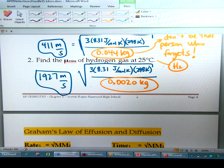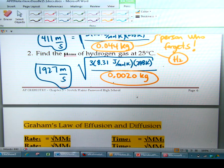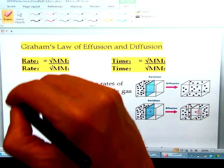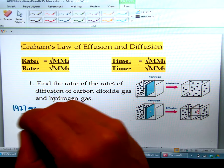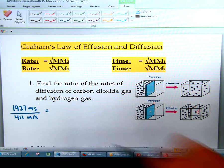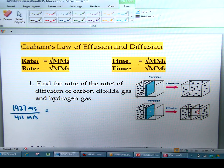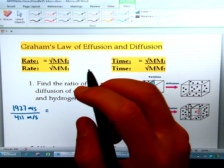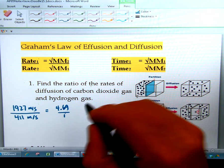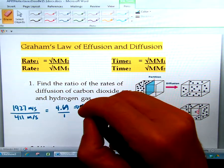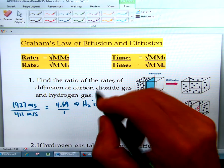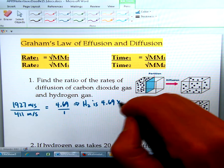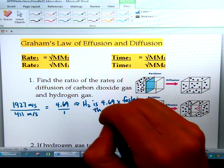If you want to take a ratio of these and find out how much faster hydrogen is than carbon dioxide, you could simply take a ratio of those two numbers. So it would be 1927 over the 411, and that's going to give you a ratio of 4.69 to 1, which means that hydrogen gas is 4.69 times faster than CO2 gas.